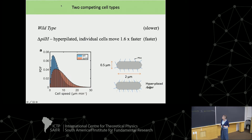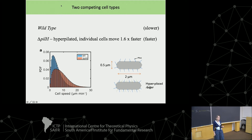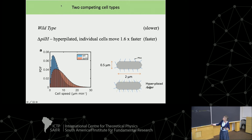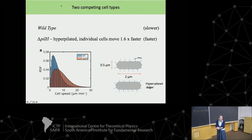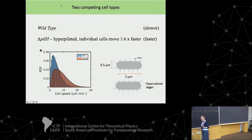This is a probability distribution showing the speeds. The wild-type are the blue ones and the hyperpiliated ones are the brown ones. You can see there's a wide spread, but the ones with more feet on average move faster — the mean of the distribution is shifted. Wild-type just means ones you haven't genetically modified, and delta-pilH is what we call the ones with more feet.